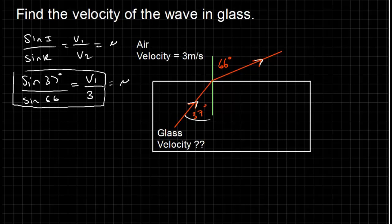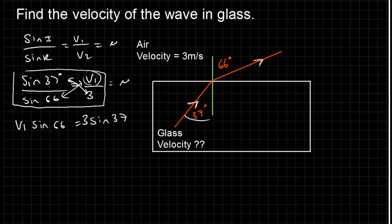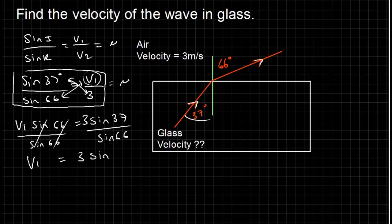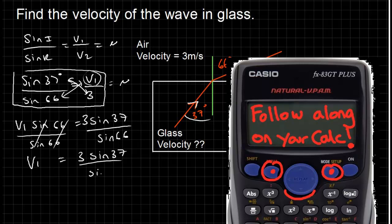I can see sine 37 over sine 66 equals V1 over 3, and I'm just missing V1. Cross-multiplying to make V1 the subject: V1 times sine 66 equals 3 times sine 37. Then dividing both sides by sine 66, the sine 66 cancels on the left. So V1 equals 3 times sine 37 over sine 66.